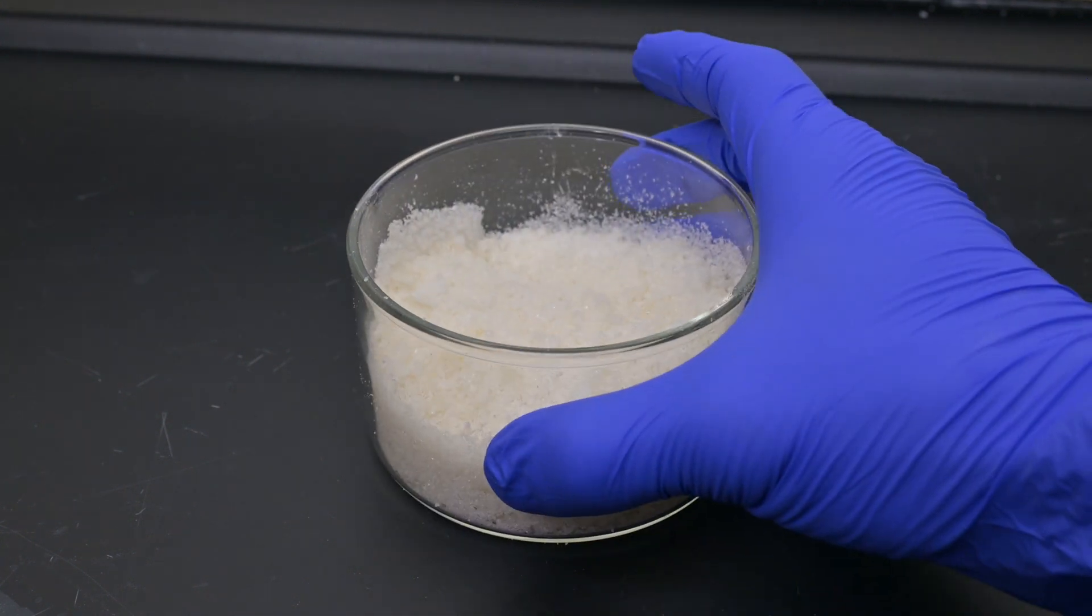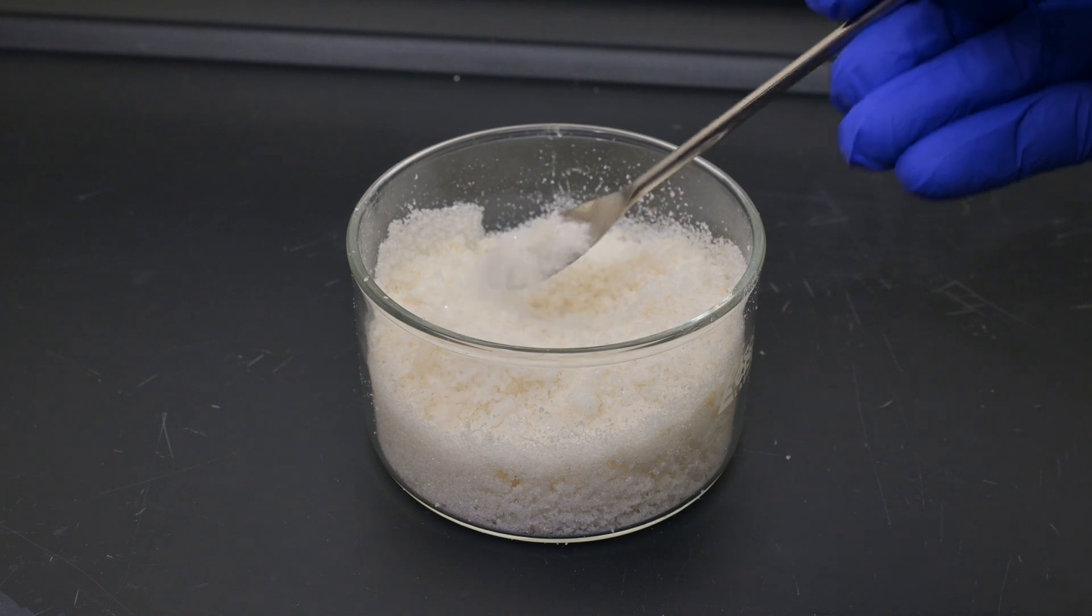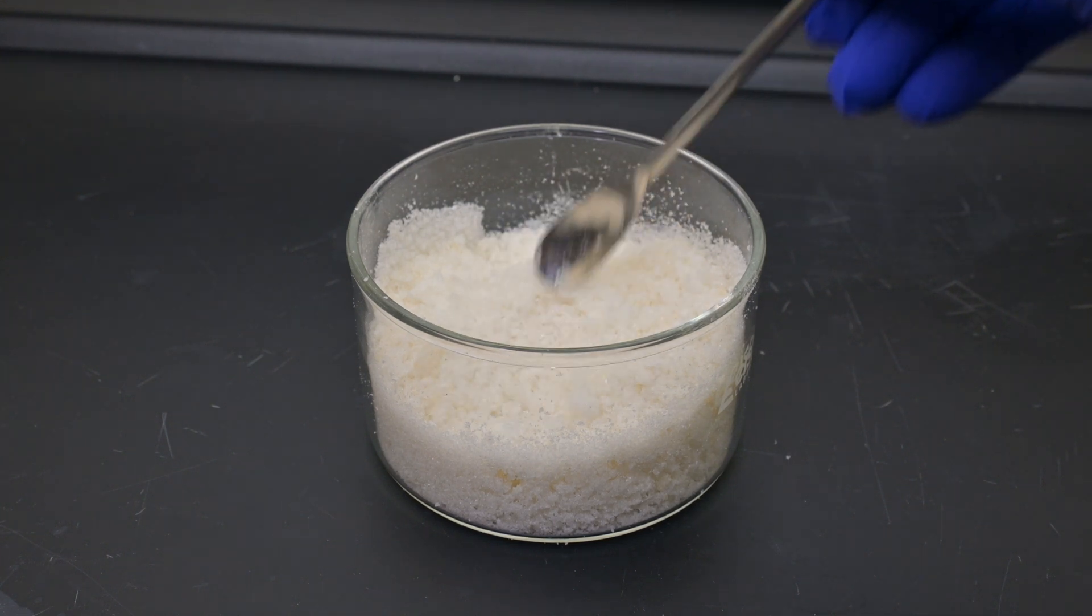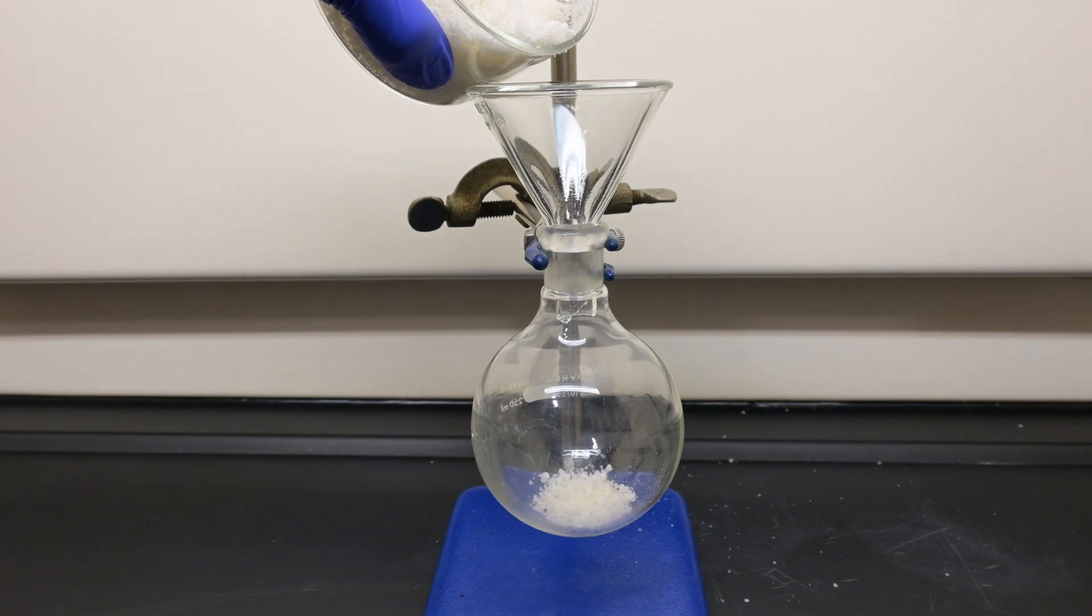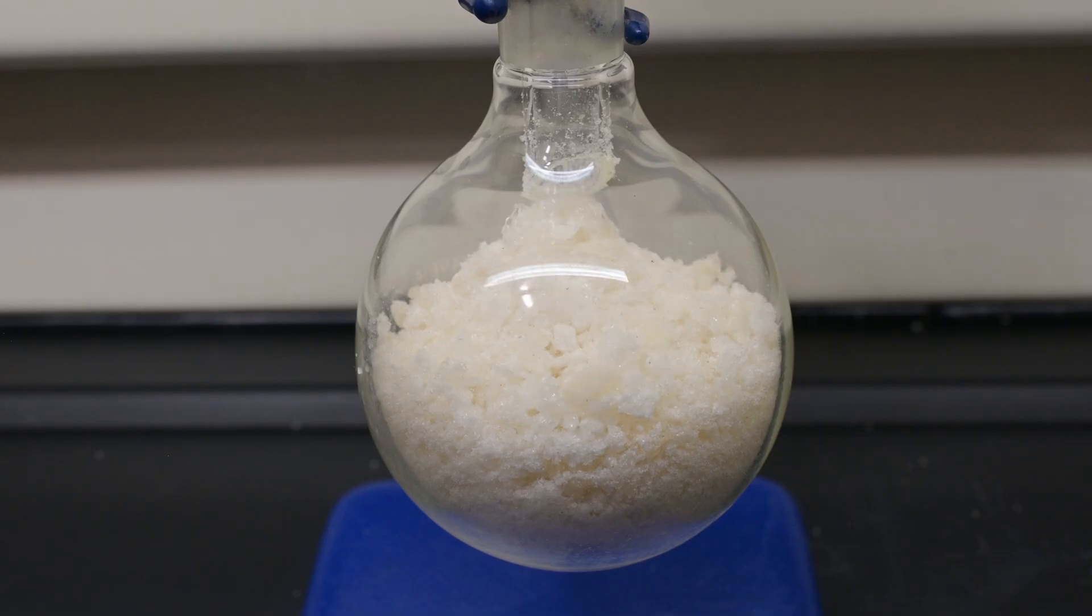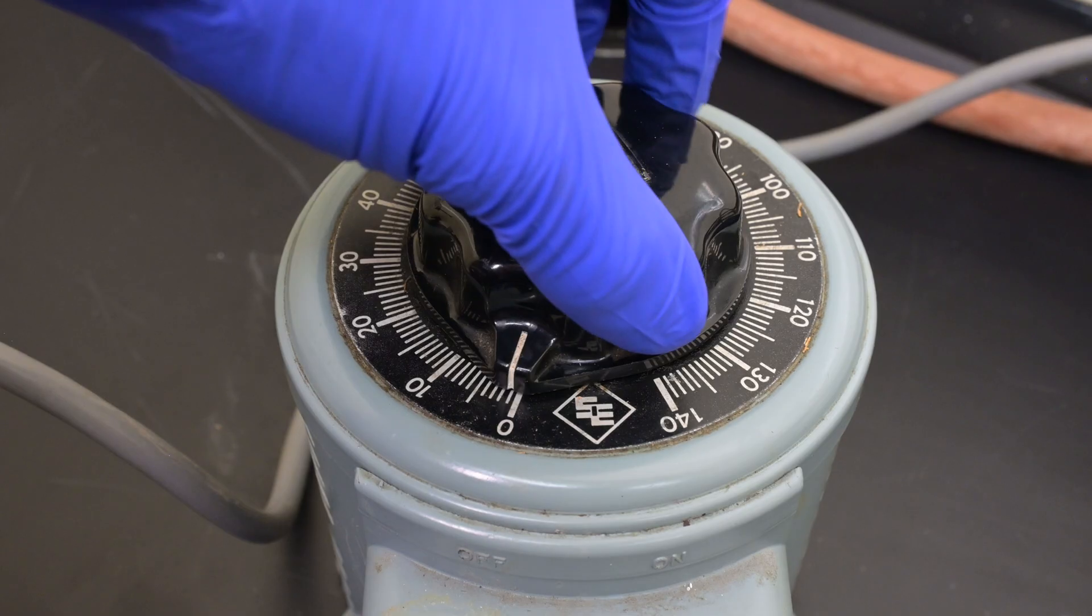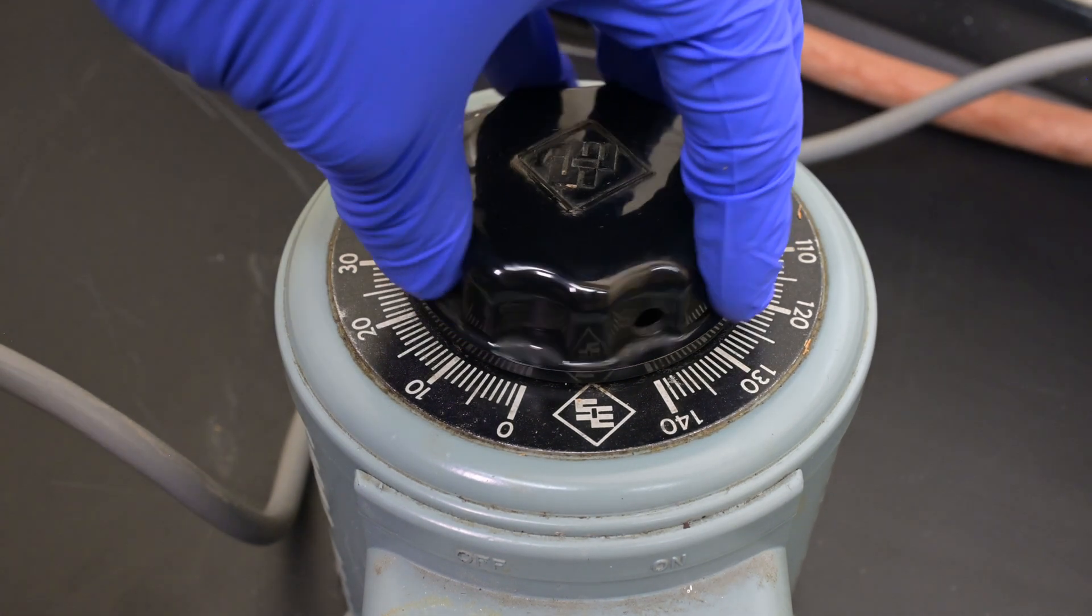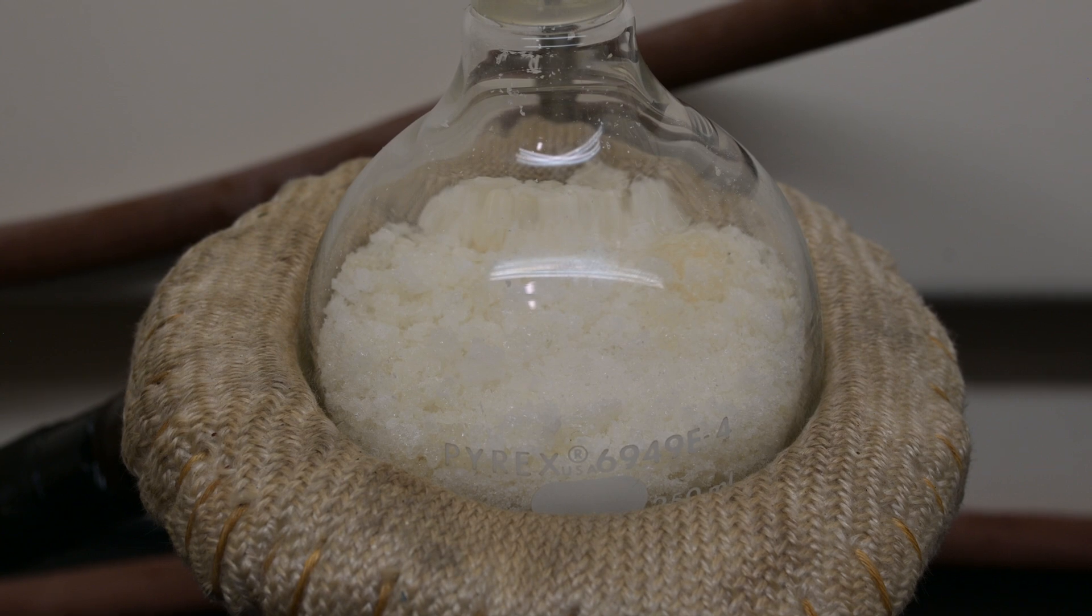The method that I will use today is known as destructive distillation. We can crack the organic compounds bonds with a high enough heat. The polystyrene is then transferred into a flask, preferably one that you don't care much about. Next, a simple distillation setup is put together along with a heating mantle. The reaction flask is ramped up to 450 to 500 degrees Celsius. High temperatures are needed for this reaction to take place.